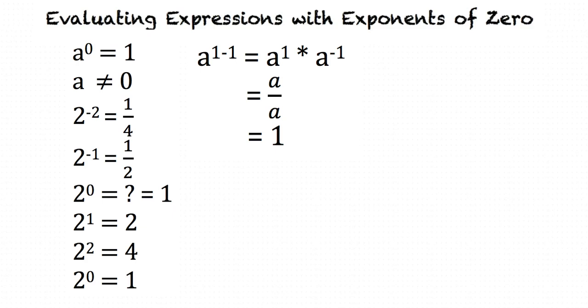In the first example, we have negative 3 in parentheses first, and then that is raised to the zero power. What is the answer to that? The answer is 1.